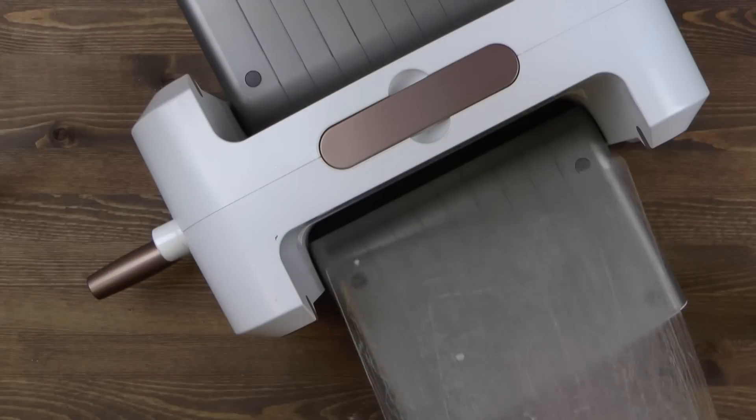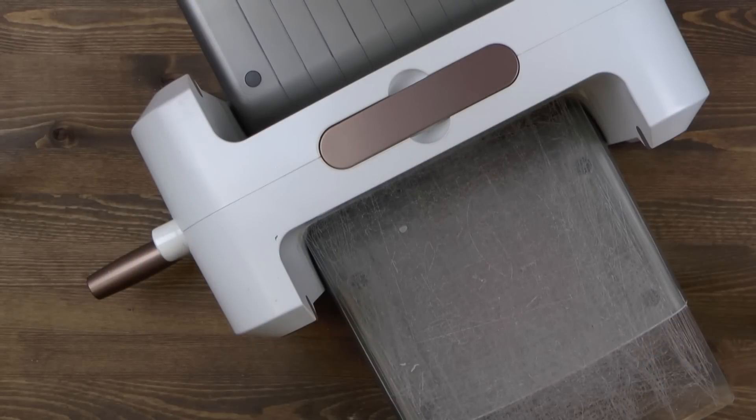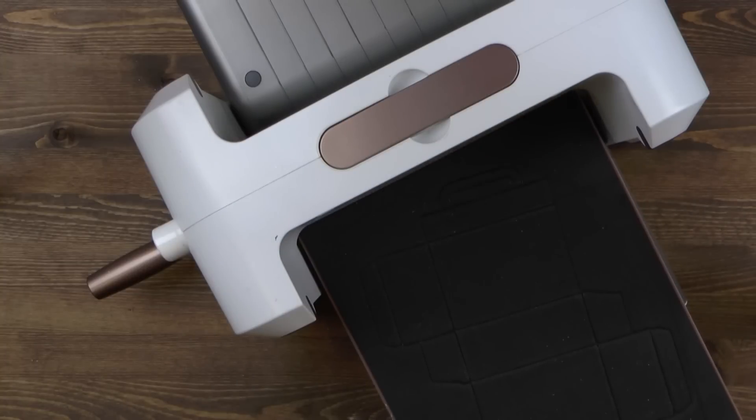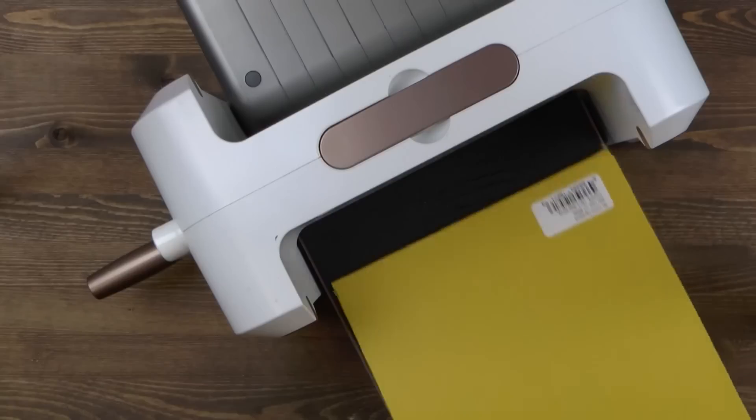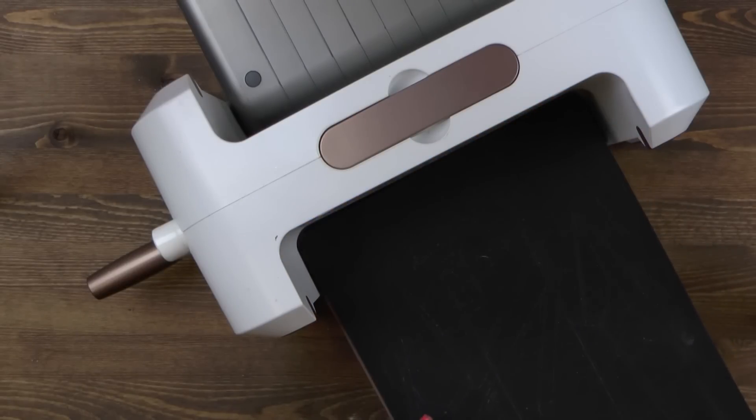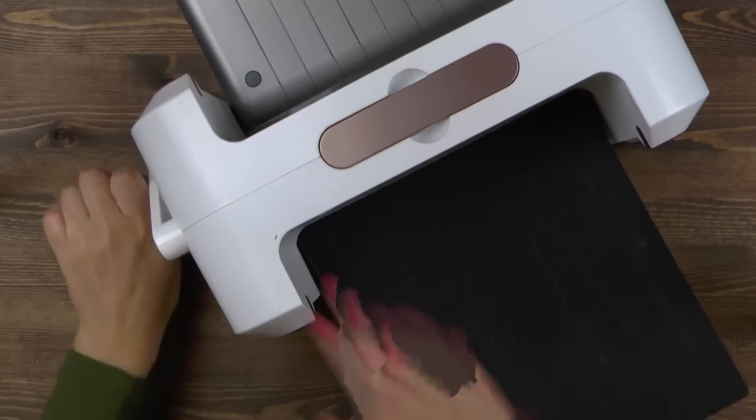You'll need to use Spellbinders Platinum Die Cutting and Embossing Machine. Place your bottom clear plate, your die with the blade facing up, next add the paper you'd like to use with the pretty side facing down, cover with a crease plate and send through the machine to cut.